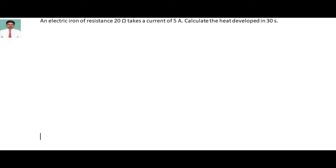An electric iron of resistance 20 ohms takes a current of 5 ampere. Calculate the heat developed in 30 seconds.